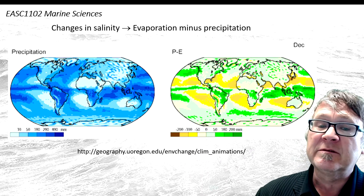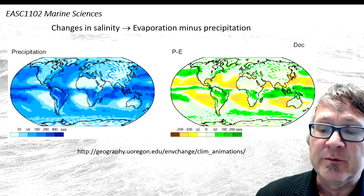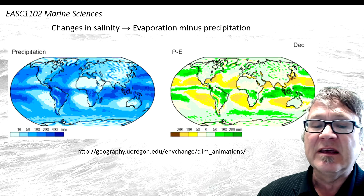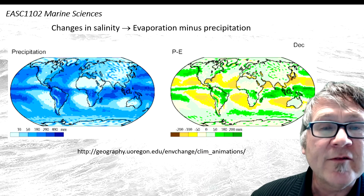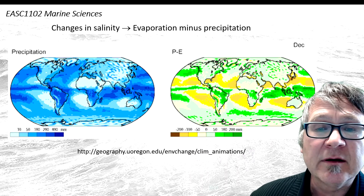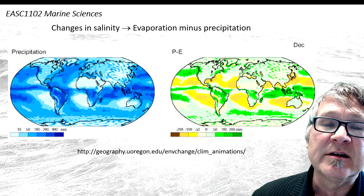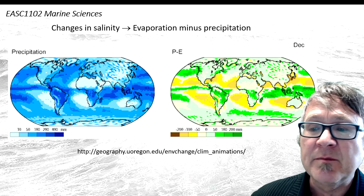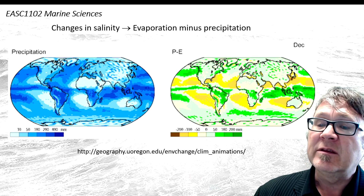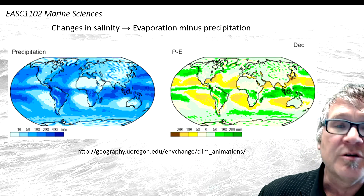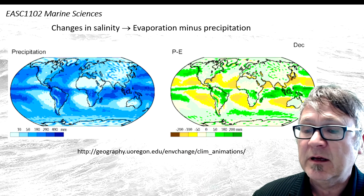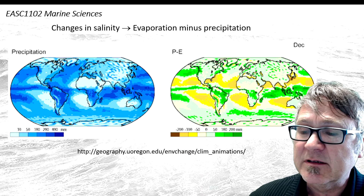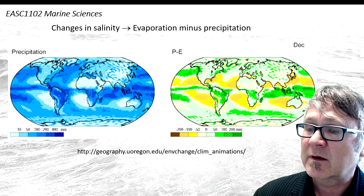I'll show you two distributions. There's also a link here where you can watch movies. This is just one example for December.